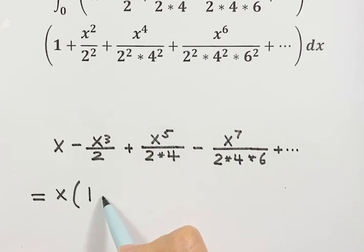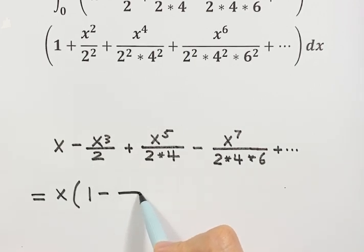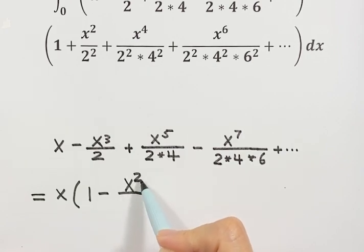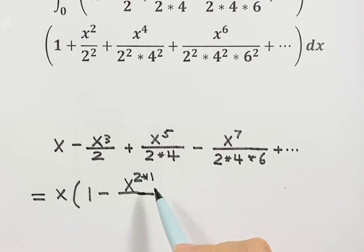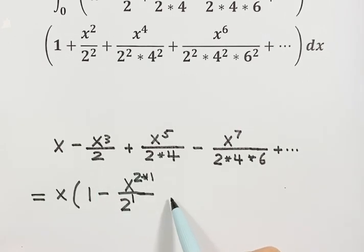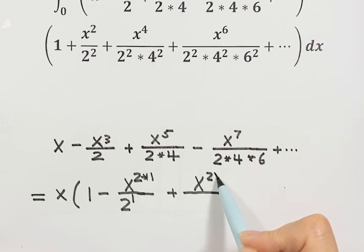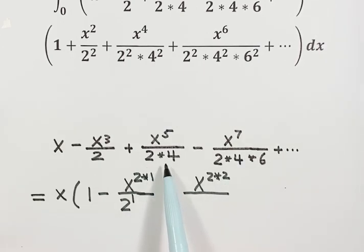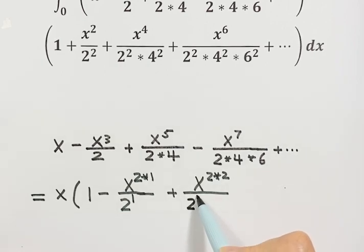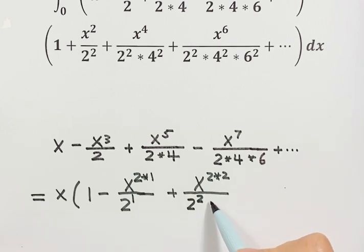Here we have 1 minus: x squared, we put x as 2 times 1. The bottom divided by 2, we put a 2 to the power 1. The second term: x to the fourth, we put x to the power 2 times 2. Then take out a factor 2 from each, so we have 2 squared. Then we still have 1 times 2, so that's 2 factorial.